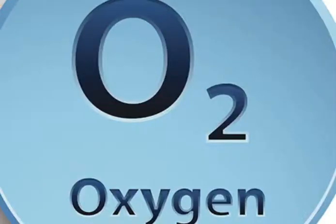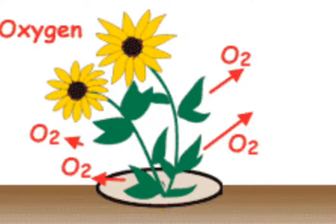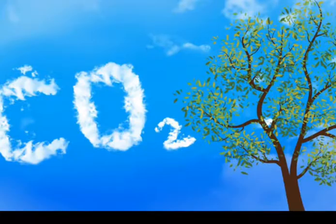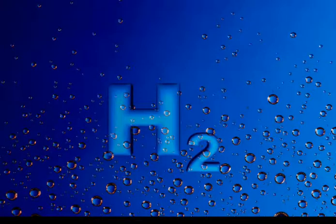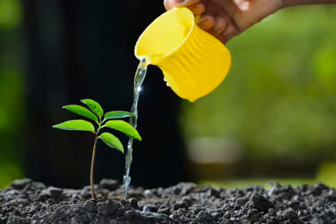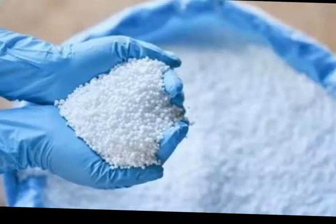Remember that oxygen, carbon dioxide, and nitrogen are components of air, so plants obtain them from the atmosphere. Hydrogen is obtained from water, so plants can obtain it from soil moisture. Fertilizers are divided into two groups.